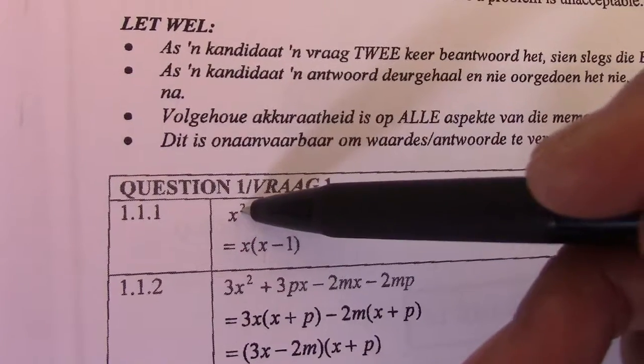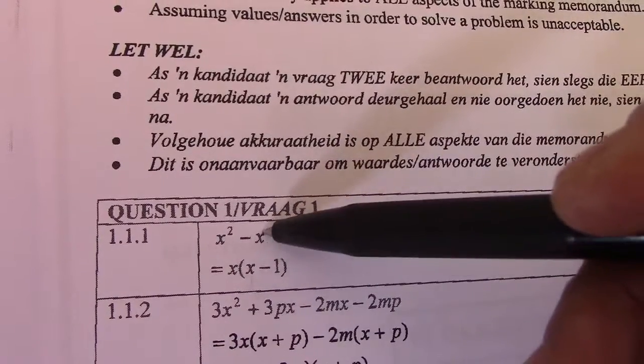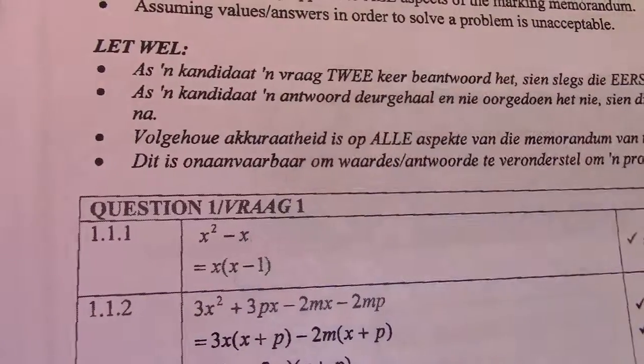So, basically what I'm going to say now is x squared divided by x gives me x. Negative sign stays, x divided by x equals 1. So, anything divided by itself equals 1.